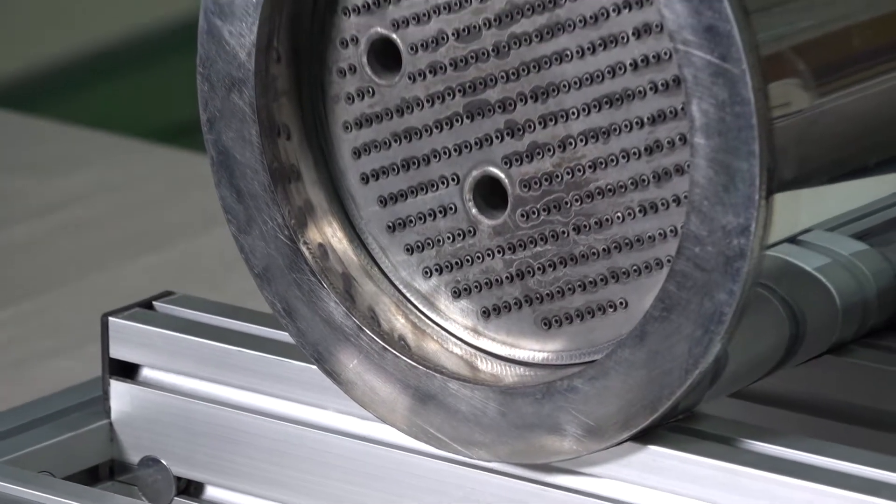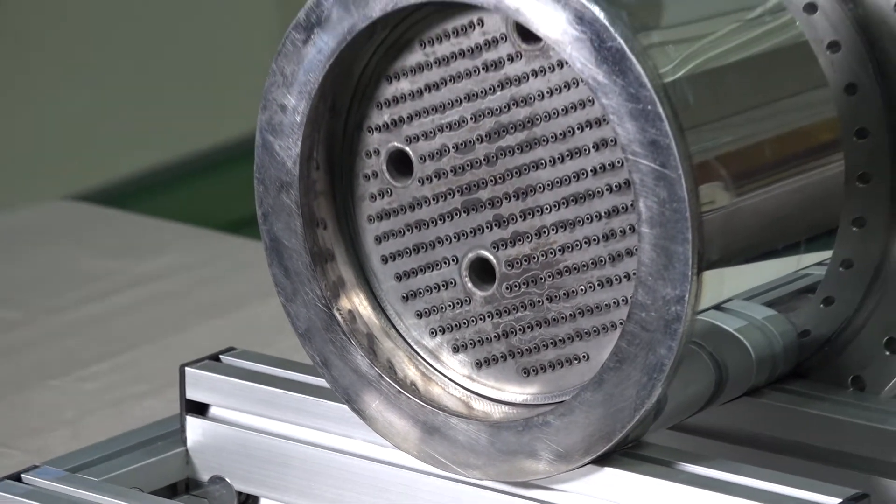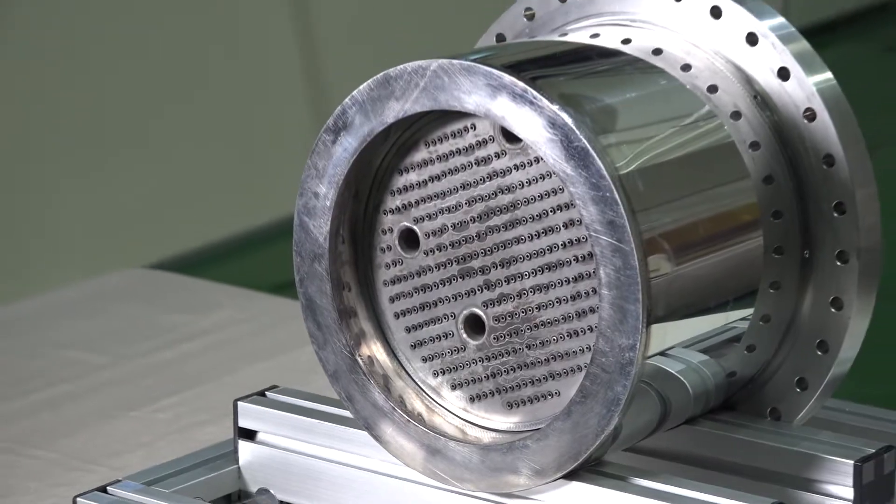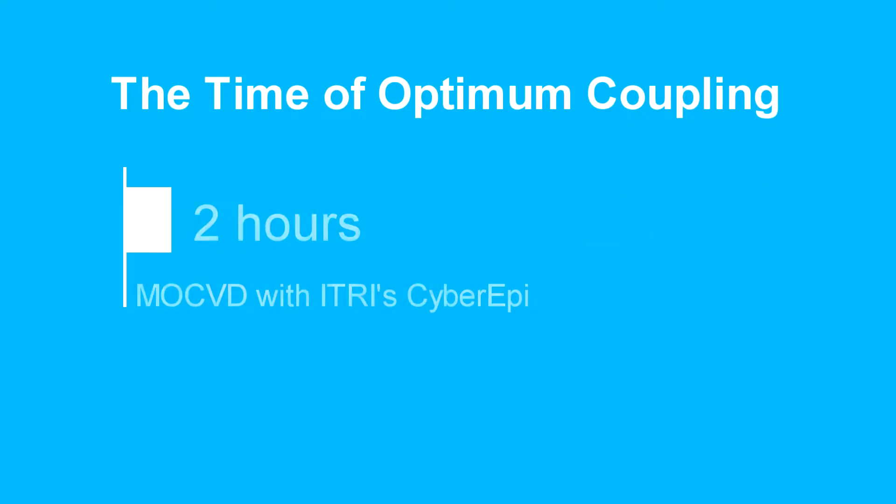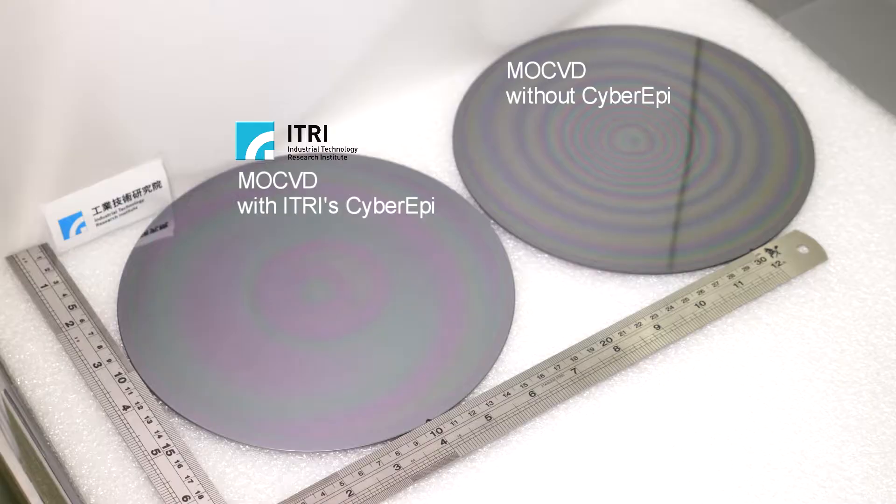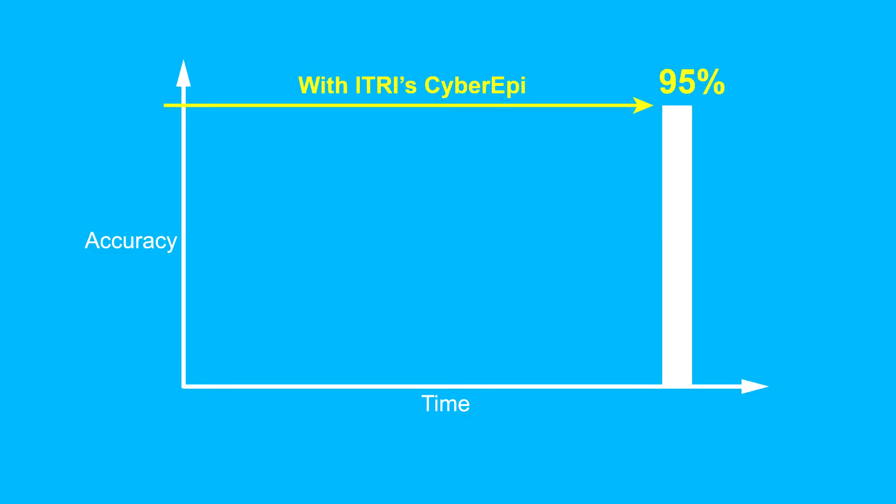CyberEpi can be used in the Epitaxi Growth process and the development of equipment modules. Its advantages include shortening the time required for determining optimal parameters from one week to two hours, and delivering a 95% accuracy of deposition rate and uniformity prediction.